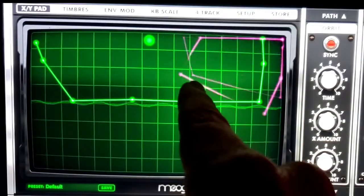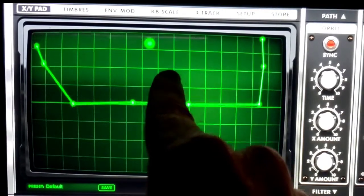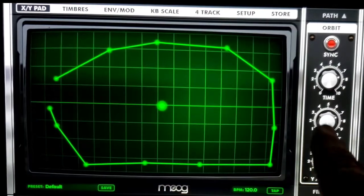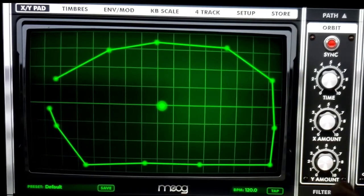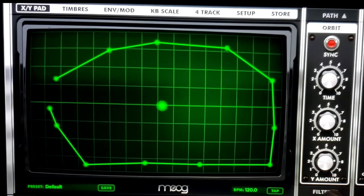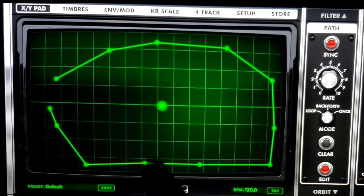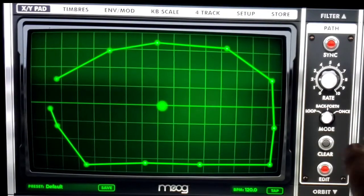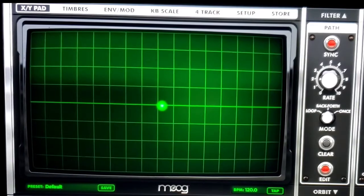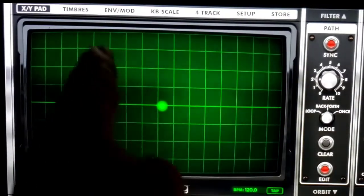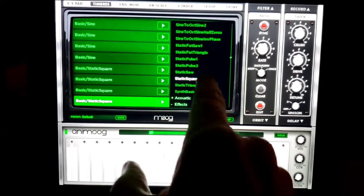I mean, the possibilities are virtually unlimited with what you can do with this thing and we're just scratching the surface here. Going back to the path, when you're done you can just hit clear and it gives you a clear screen. You can create a new path, go back to your timbres and change your sounds.